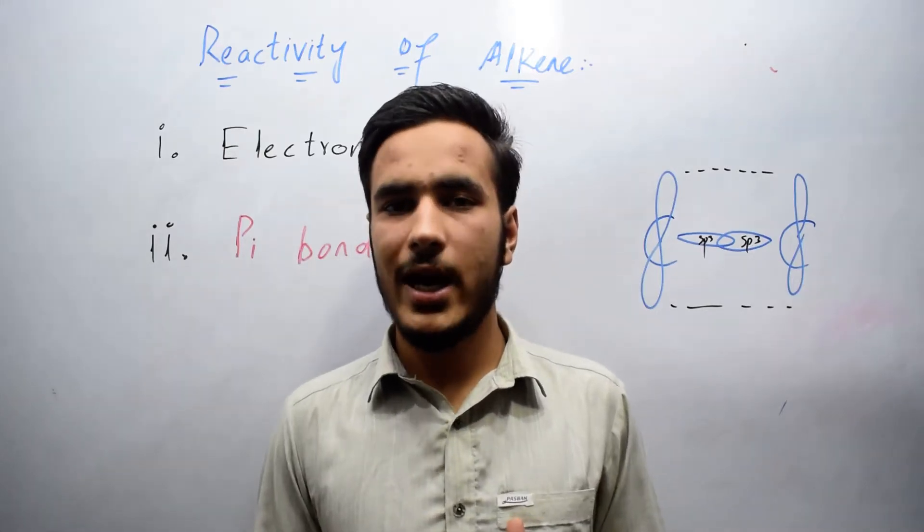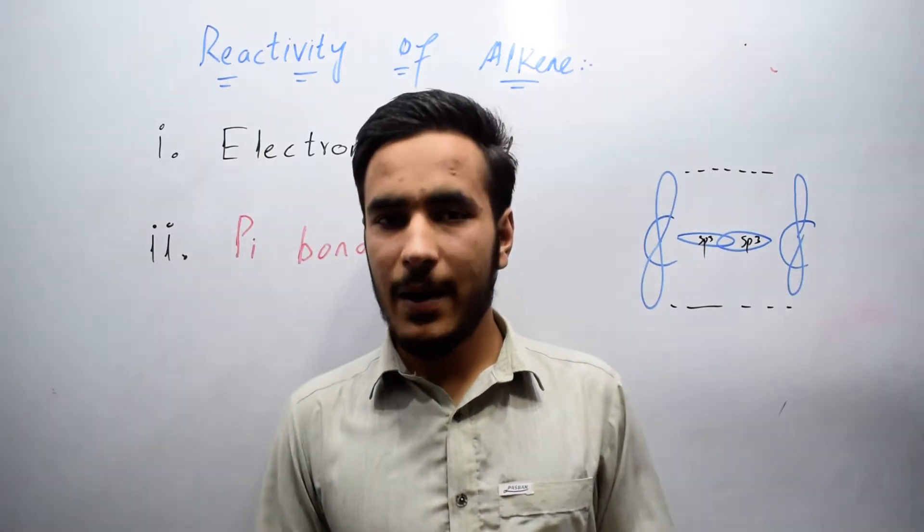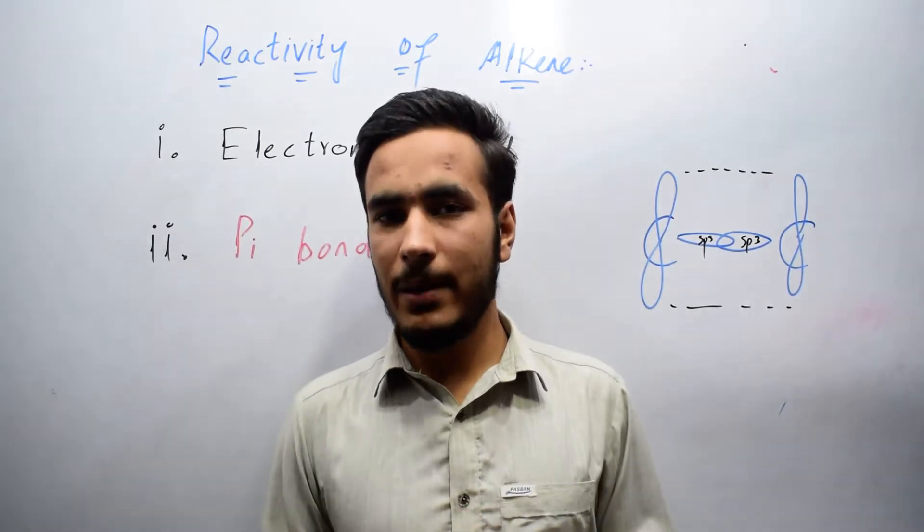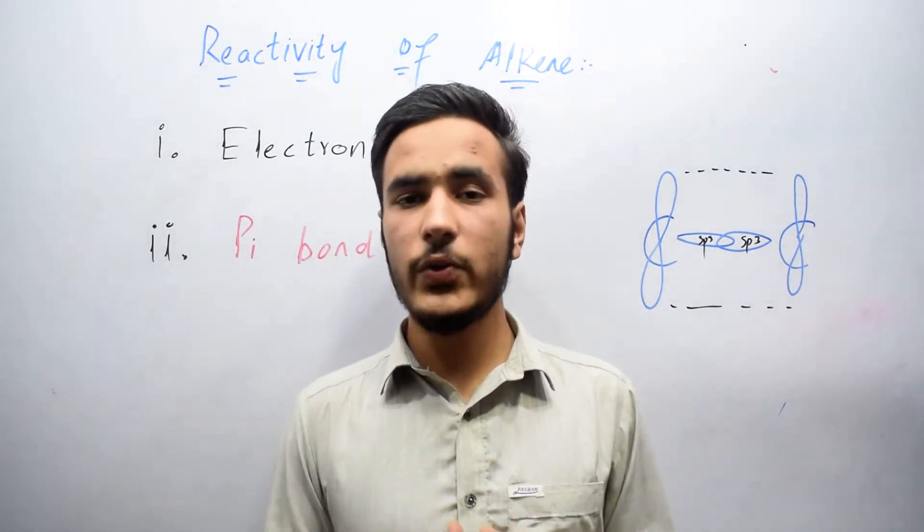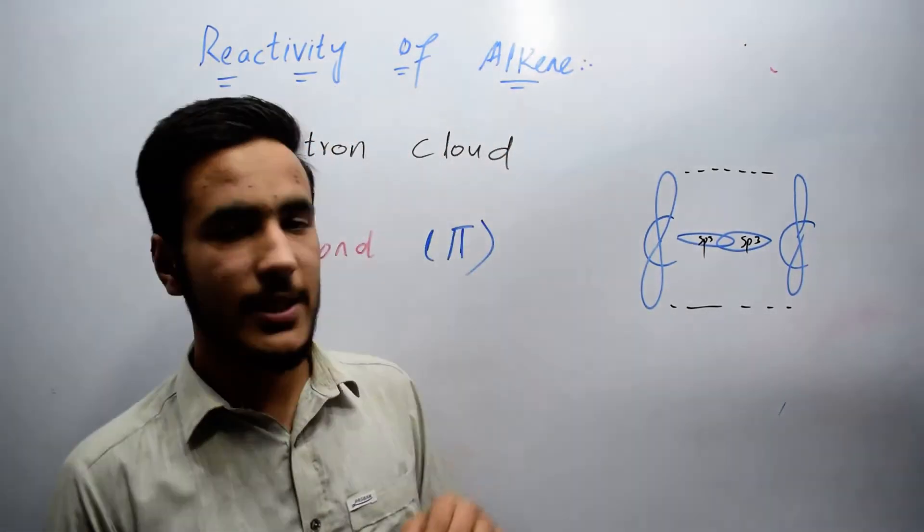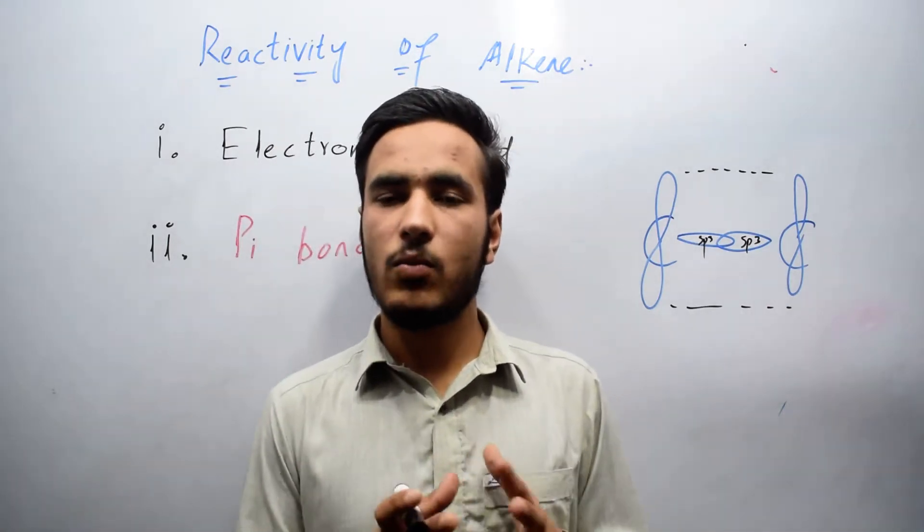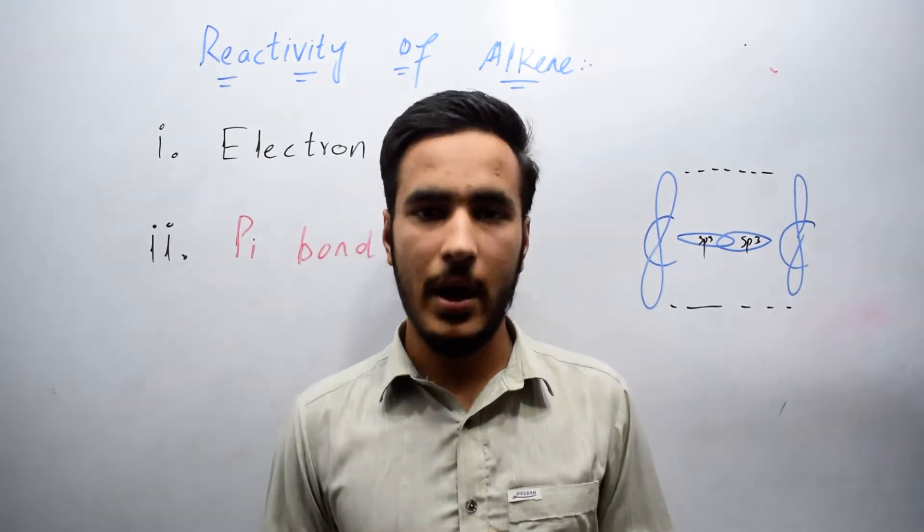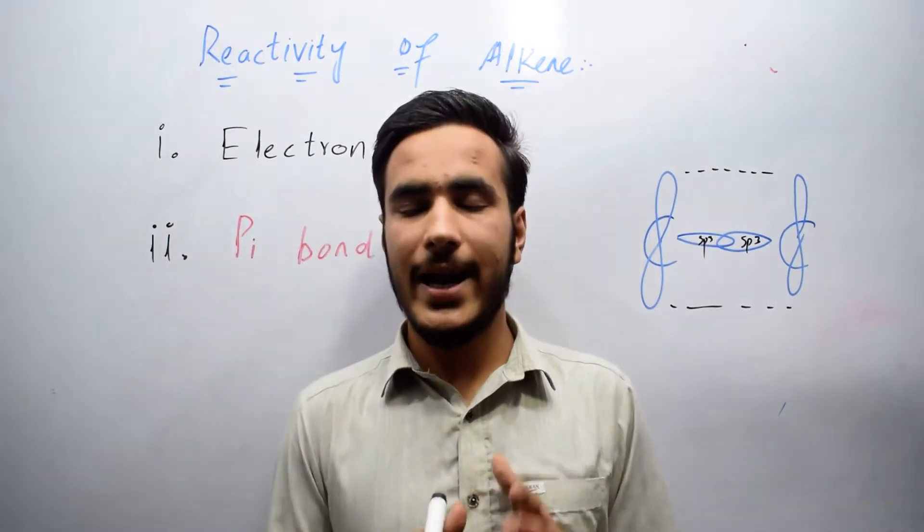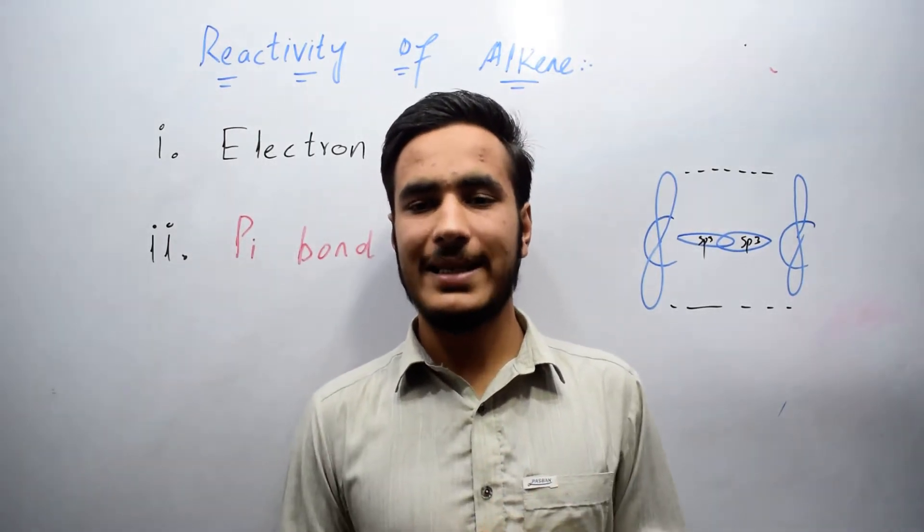Alkenes are unsaturated hydrocarbons in which carbon-carbon atoms are bonded by a double bond. Here we will talk about reactivity of alkenes. Basically, alkene is more reactive than alkane due to the double bond. We know that in alkane there is only a single bond.